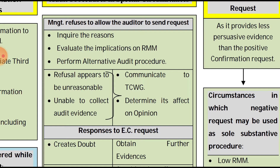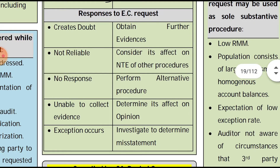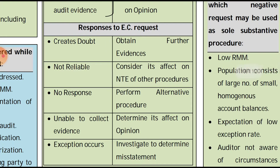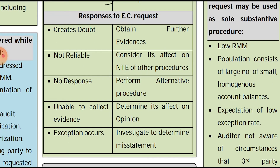Based on responses to external confirmation requests, the auditor should take the following actions: if the response creates doubt, obtain further evidence to clarify it; if the information is not reliable, consider the impact on the nature and extent of other audit procedures; if no response is received, perform alternative audit procedures; if still unable to collect audit evidence, determine the effect on the audit opinion; and if exceptions are found in the response, investigate to determine whether a misstatement exists.